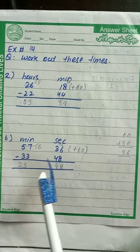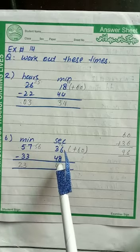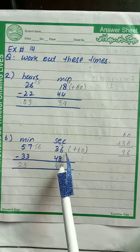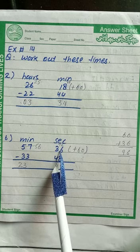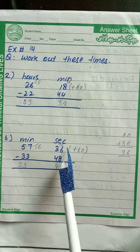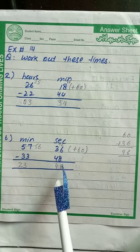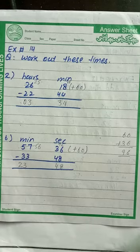So you have to borrow 1 hour. You add 60 and 36 to get 96. Then you subtract it, and the answer is 23.